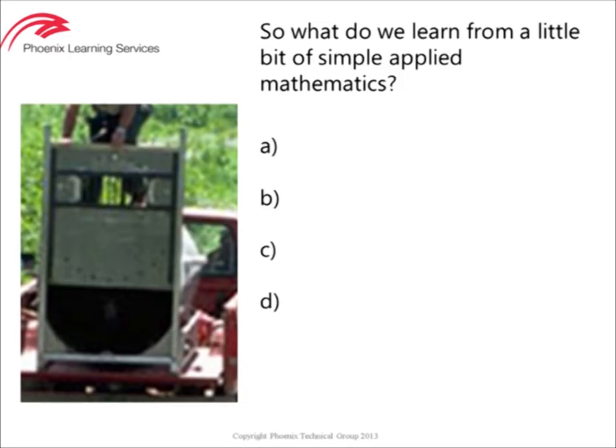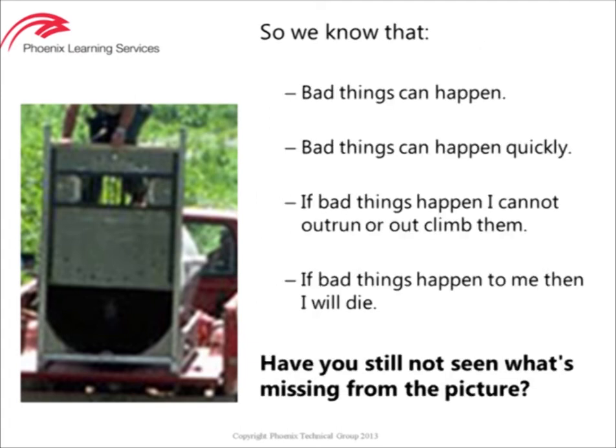By doing the simple math, we suddenly realise that the forces at play here are substantial. They're frightening. So why aren't we doing something to protect ourselves? Why isn't Chuck doing something to protect himself? We know that bad things can happen, and that bad things can happen quickly. And if bad things happen quickly, I cannot outrun or out-climb them. So if bad things happen to me, I will probably die.